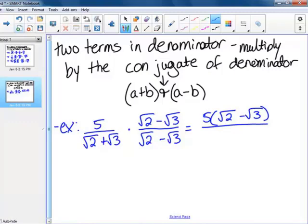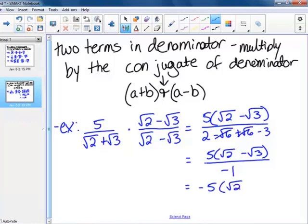On the bottom, I'm going to FOIL. First is square root of 2 times square root of 2, which is 2. Outer is minus square root of 6. Inner is plus square root of 6. Last is minus square root of 3 times square root of 3, which is 3. Notice what happens - this is why we do the conjugate. Your outer and inner drop out, and your first and last becomes just a whole number or integer. On the bottom, I have 2 minus 3, which is negative 1. That's the same as negative 5 times square root of 2 minus square root of 3.